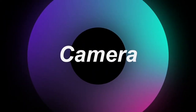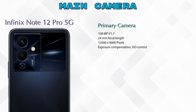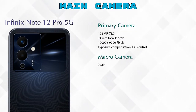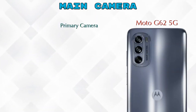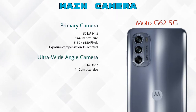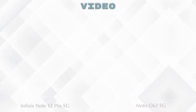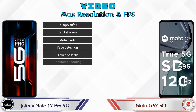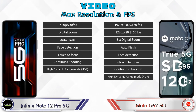Now let's look at the cameras. For the rear camera, the Note 12 Pro 5G has three cameras: a primary camera, a macro camera, and a depth camera. The Moto G62 5G also has three cameras: a primary camera, an ultra-wide angle camera, and a macro camera. For video, the Note 12 Pro 5G offers 7 different features and the Moto G62 5G offers 8 different types.